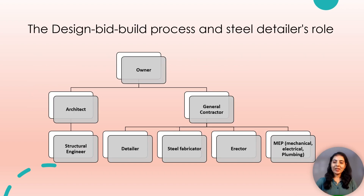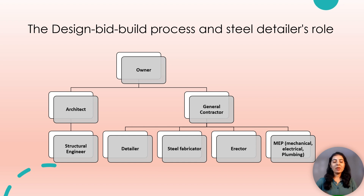Traditionally, a steel construction team consists of the owner, architect, engineer, contractor, fabricator, steel detailer, erector, and inspector. Sometimes the team also includes a construction manager, who is responsible for having the project completed on time and within budget.